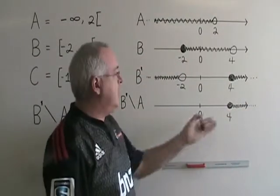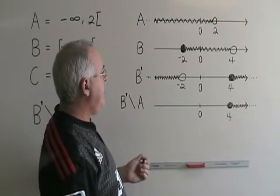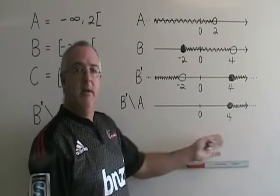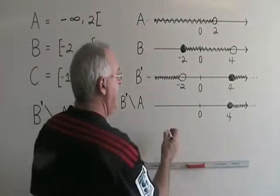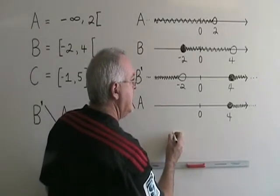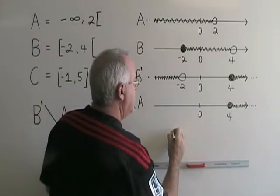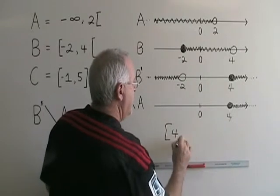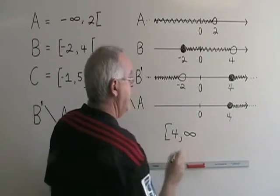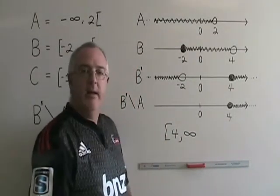And I put dots to show it continues. My answer, therefore, is from four included to positive infinity, and I will give my answer on the number line, but also in interval notation. And the example is done.